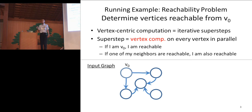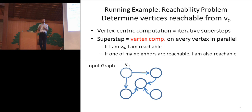For this reachability problem, the vertex computation is like this. Please think as a vertex. If I am the vertex V0, then trivially I'm reachable. And also, if one of my neighbors is reachable, then I'm also reachable. This is vertex-centric thinking.